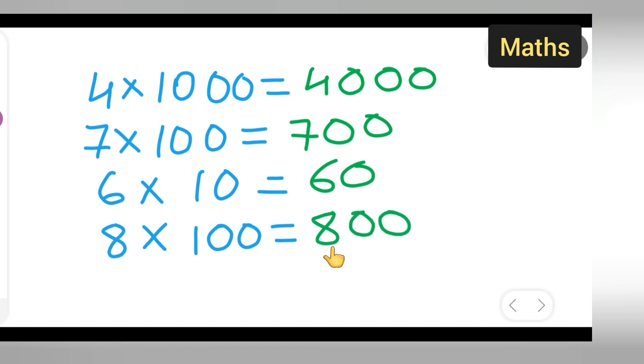Everywhere you have to do the same thing. Here 6 is given, 6 ones are 6, add this 0. 7 ones are 7, add these 2 zeros. 4 ones are 4, add these 3 zeros.